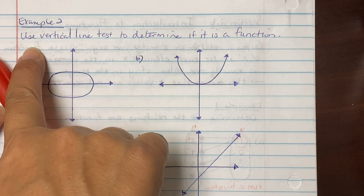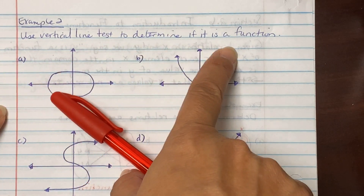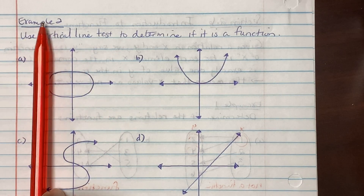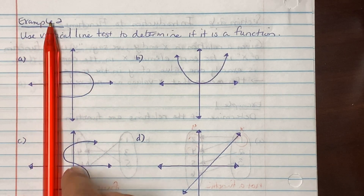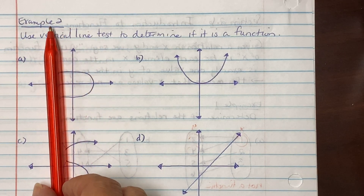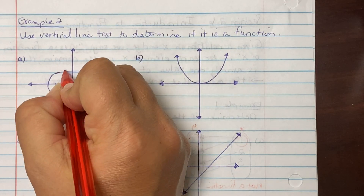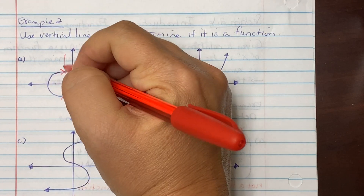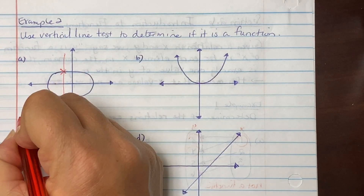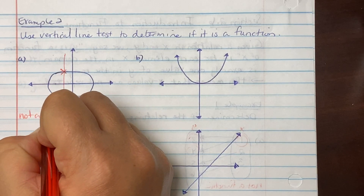Example 2 says use the vertical line test to determine if it is a function. I'm rolling my pen left to right, and notice that it hits here and here — they are intersecting, which means it's not a function.